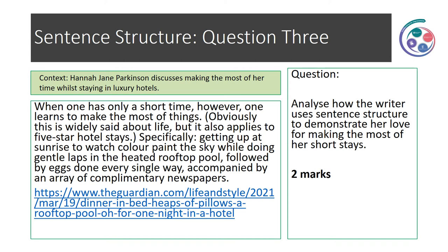Question three. Context: Hannah Jane Parkinson discusses making the most of her time while staying in luxury hotels. 'When one has only a short time, however, one learns to make the most of things. Obviously, this is widely said about life, but it also applies to five star hotel stays. Specifically, getting up at sunrise to watch colour paint the sky while doing gentle laps in the heated rooftop pool. Followed by eggs done every single way. Accompanied by an array of complimentary newspapers.' Analyse how the writer uses sentence structure to demonstrate her love for making the most of her short stays. This is a two marker, so it should take you around three minutes. Set a timer and pause the video now to attempt this at home.